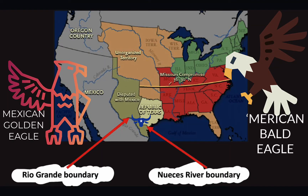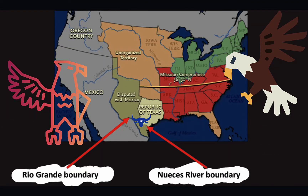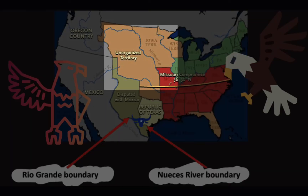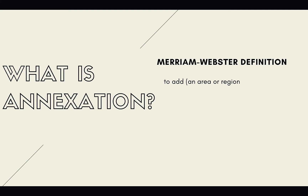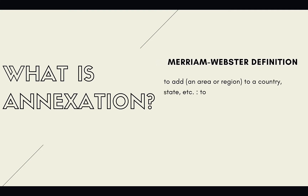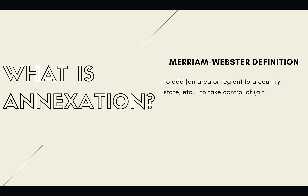That would mean the red team — the southern slave states — would gain an additional slave state, which would disrupt the balance of power between the free states and the slave states in the United States. You can also see the very light peach color on the map — that is all unorganized territory.